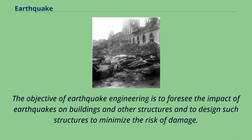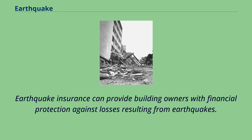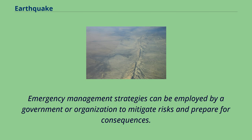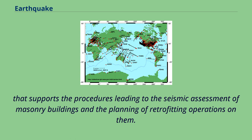The objective of earthquake engineering is to foresee the impact of earthquakes on buildings and other structures and to design such structures to minimize the risk of damage. Existing structures can be modified by seismic retrofitting to improve their resistance to earthquakes. Earthquake insurance can provide building owners with financial protection against losses. Emergency management strategies can be employed by a government or organization to mitigate risks and prepare for consequences. Artificial intelligence may help to assess buildings and plan precautionary operations — the Igor expert system is part of a mobile laboratory that supports seismic assessment of masonry buildings and planning of retrofitting operations.